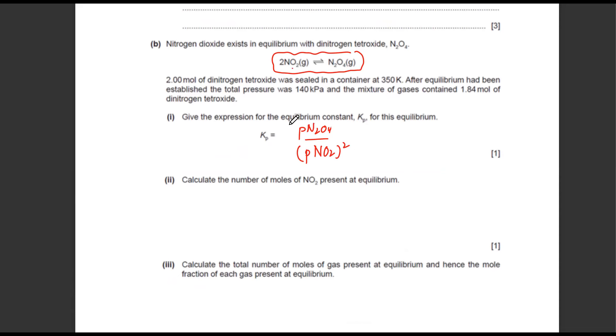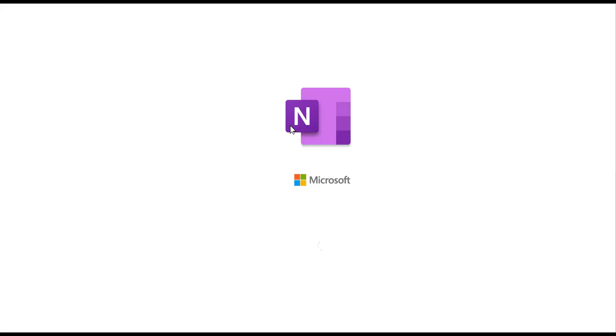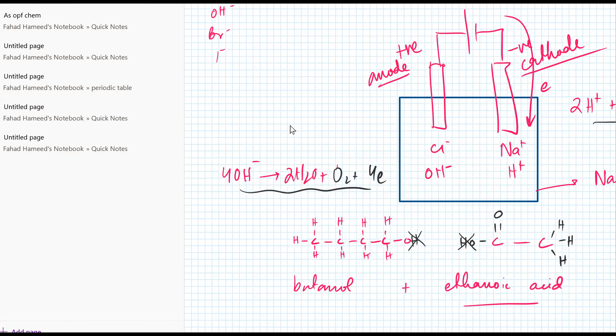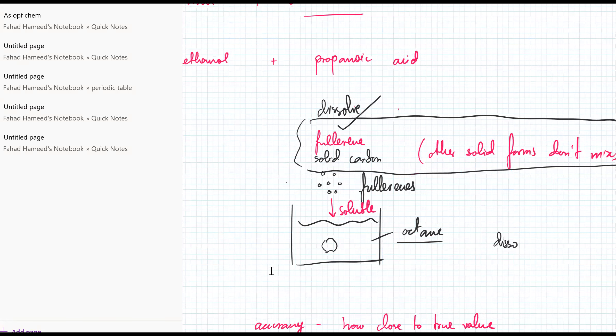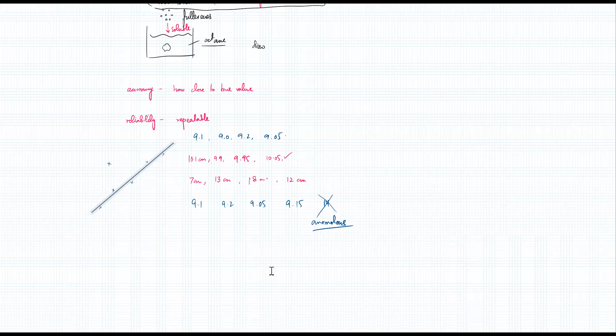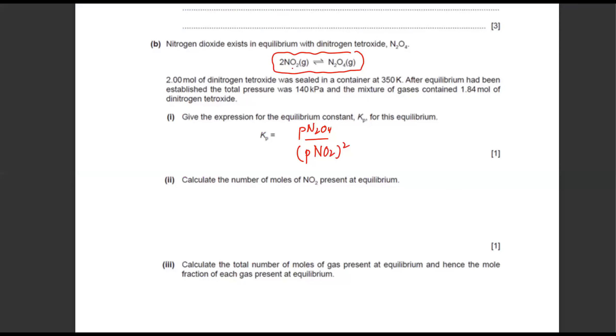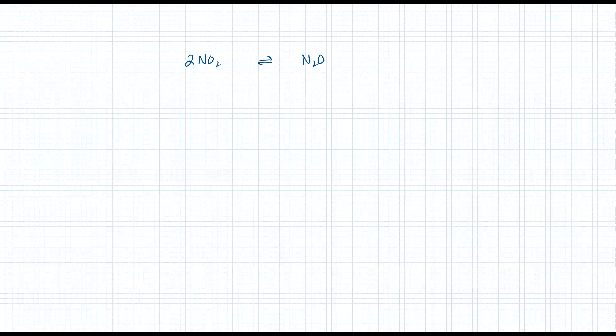The next question involves the equilibrium: 2NO2 ⇌ N2O4. We need to work through the initial moles and equilibrium moles. Let me write down the equation: 2NO2 is in equilibrium with N2O4.